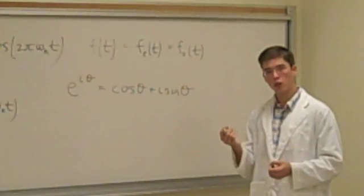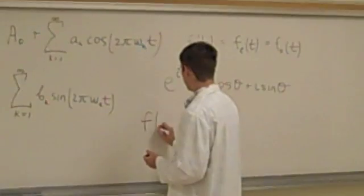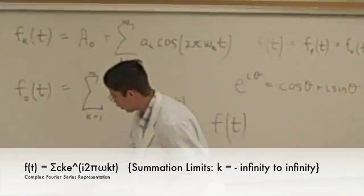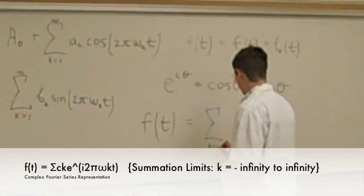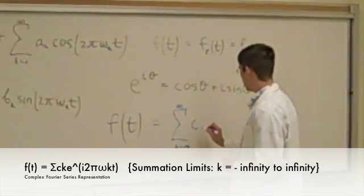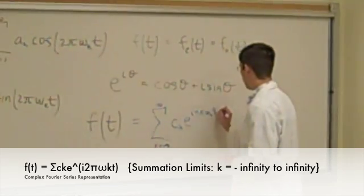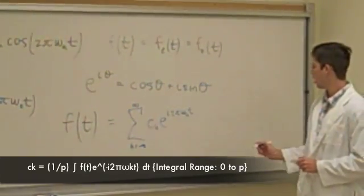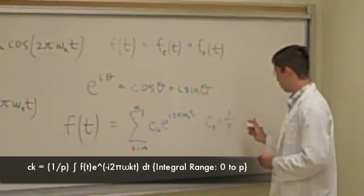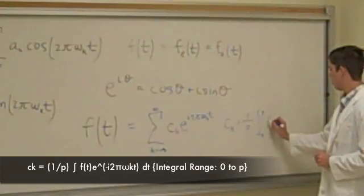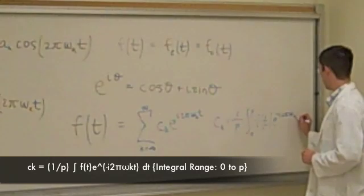So, what does the complex Fourier series representation of a function look like? We write that a function f of t is equal to the sigma from k equals negative infinity to infinity of c sub k times e to the i 2 pi omega sub k t. Where c sub k is just another constant, written as 1 over the period p, times the integral from 0 to p of f of t times e to the negative i 2 pi omega sub k t, dt.